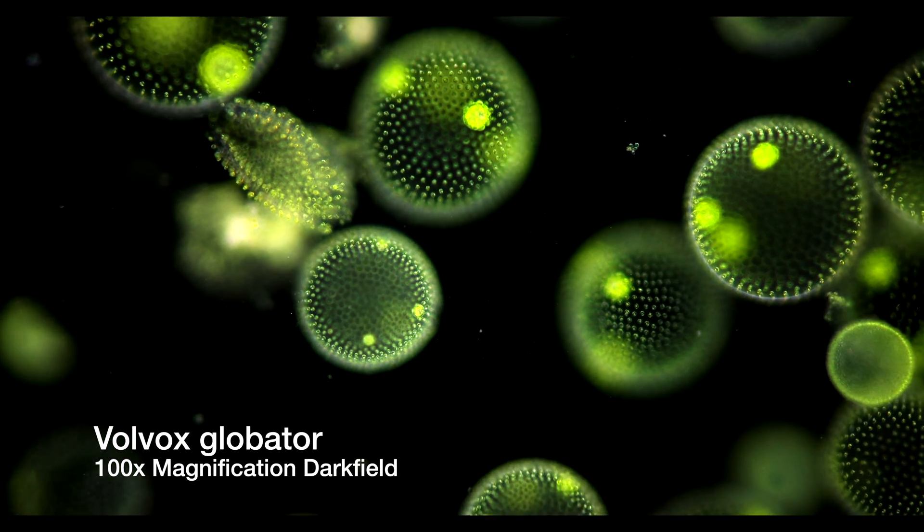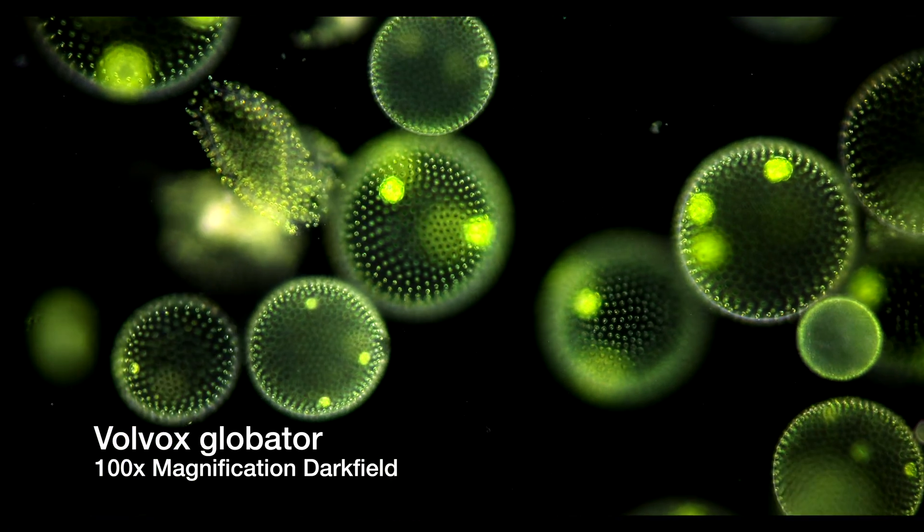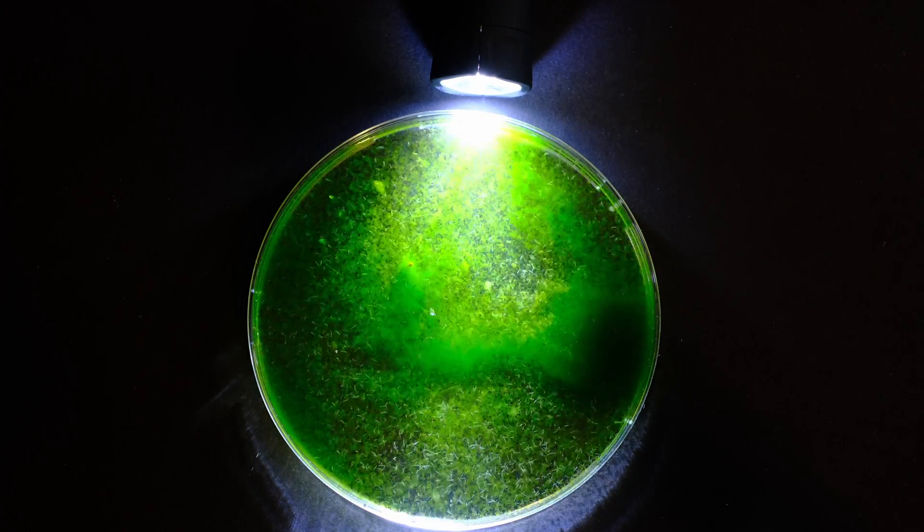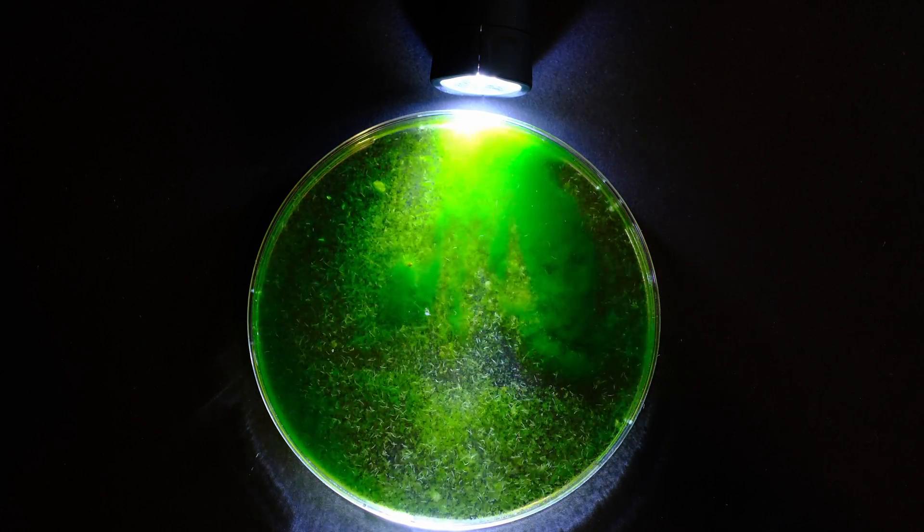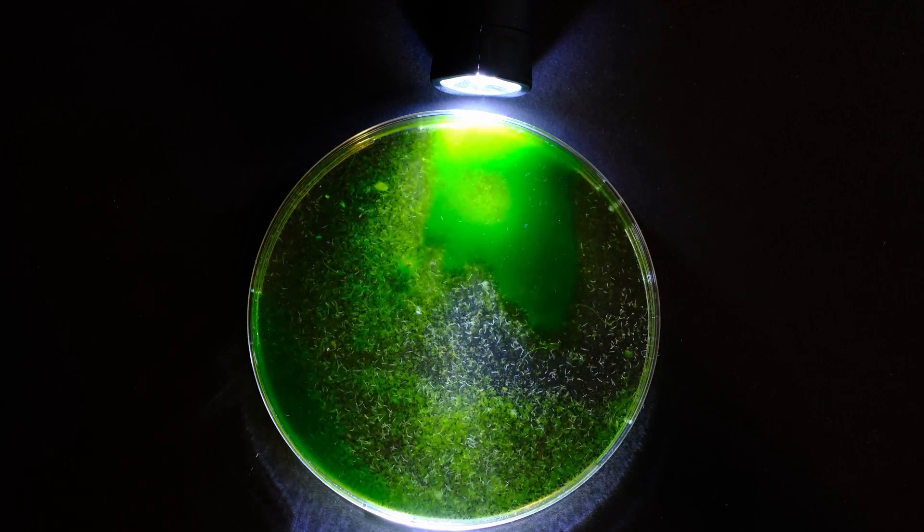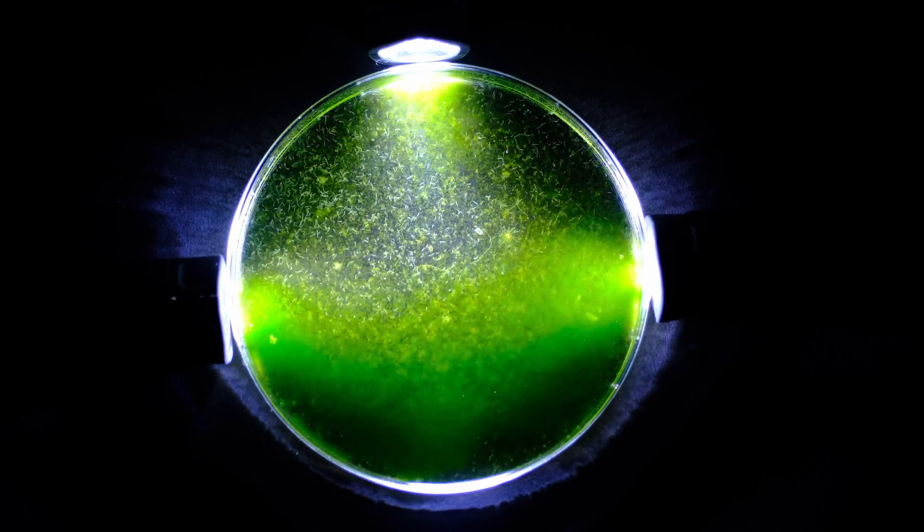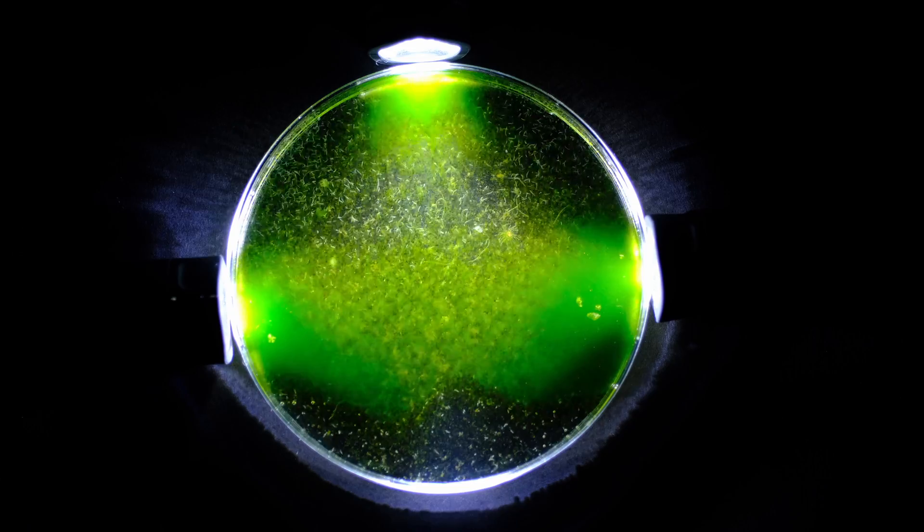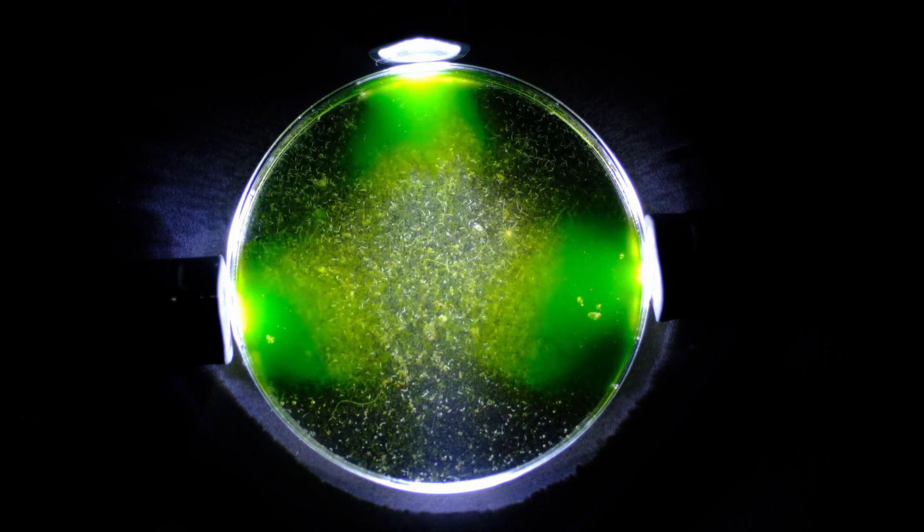To purify my samples, I used a light trap method. I put pond water in a petri dish and used flashlights to attract the light-sensitive Volvox algae to one side of the container. This procedure made it easier to siphon Volvox off without the other pesky pond creatures.